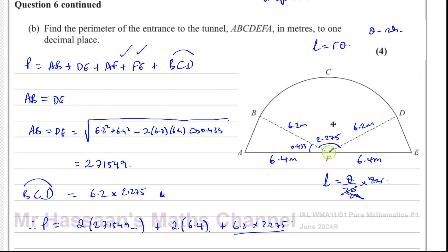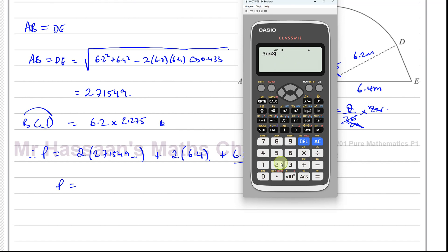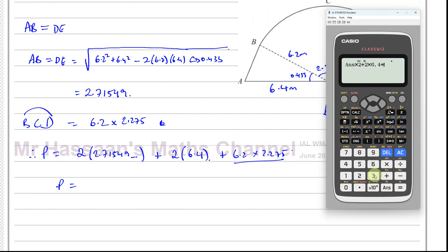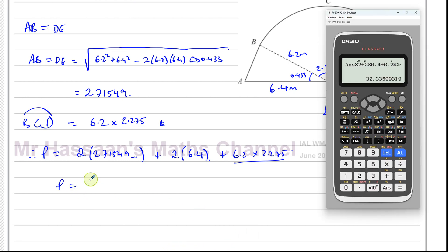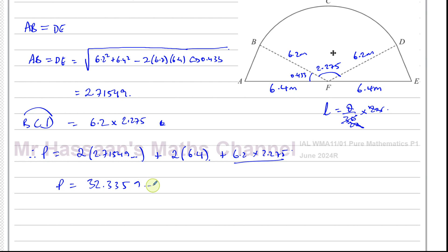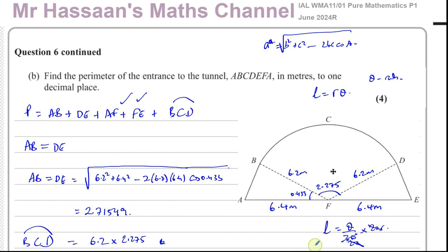Putting it all together, the perimeter equals 2 × 2.71549 + 2 × 6.4 + 6.2 × 2.275. Computing this gives 32.3359..., which to one decimal place is 32.3 meters.